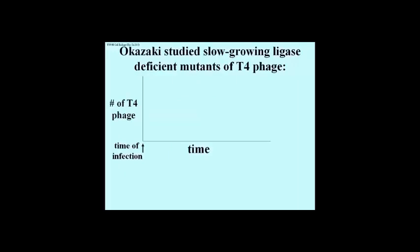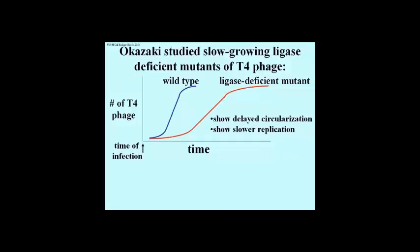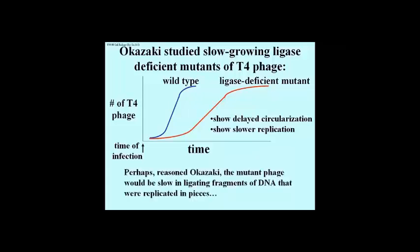Okazaki knew the role of DNA ligase in closing bacteriophage DNA circles, and he had isolated several mutant strains of the phage, called T4, that were deficient in making DNA ligase. These phage multiplied more slowly than wild type phage, as shown by the growth curves on this slide, because the mutant phage were slow to close their DNA circles after infecting E. coli cells. But Okazaki also proposed that phage DNA replication itself might be using DNA ligase to stitch together fragments of DNA made discontinuously on the lagging template strand at replication forks.